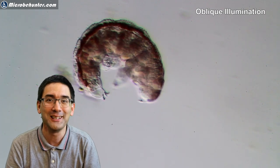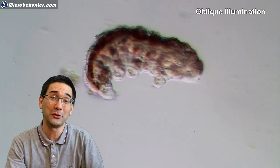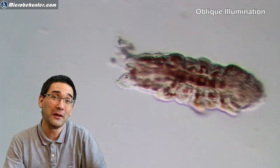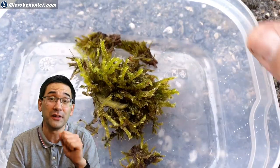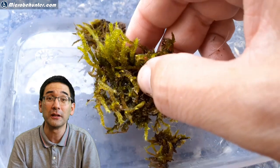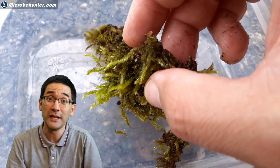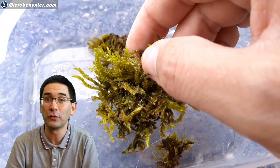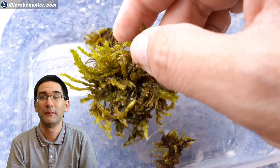You might also wonder what do they eat. Well, they eat bacteria and other small cellular material, and some of them even eat other tardigrades, so they're cannibals even. You find everything in nature.